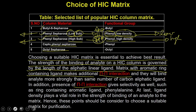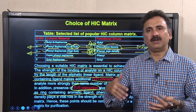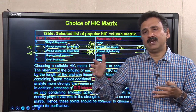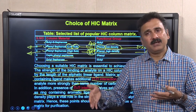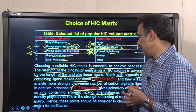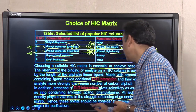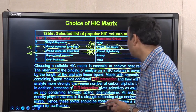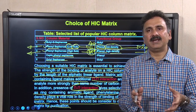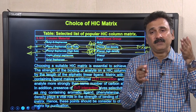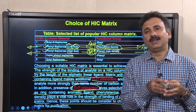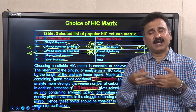Pi-pi interactions always give additional selectivity, such as with ring-containing aromatic ligands like phenylalanine. The additional advantage of using aromatic or ring-containing groups on the matrix compared to aliphatic amino acids is noted. Ligand density also plays a vital role in the strength of binding of an analyte through the matrix. These points should be considered when choosing a suitable matrix for purification. HIC always utilizes hydrophobic interactions between groups on the matrix and hydrophobic patches on the proteins, and these interactions are very strong.